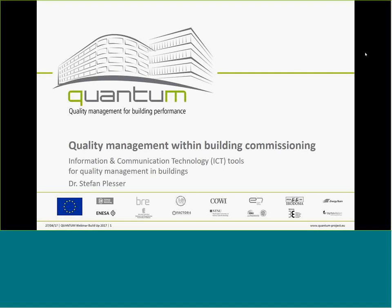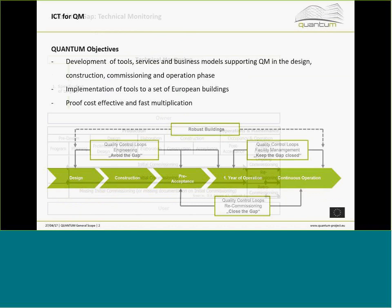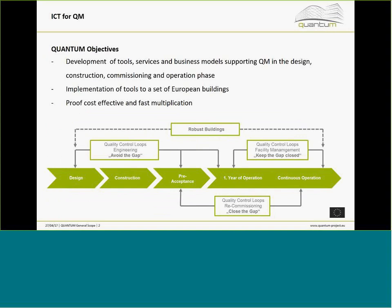Those processes are necessary for commissioning — this is actually the starting point for the QUANTUM project. The objective is to identify individual processes that are linked to the quality management process or could be integrated into it. In our proposal we have defined three essential processes.